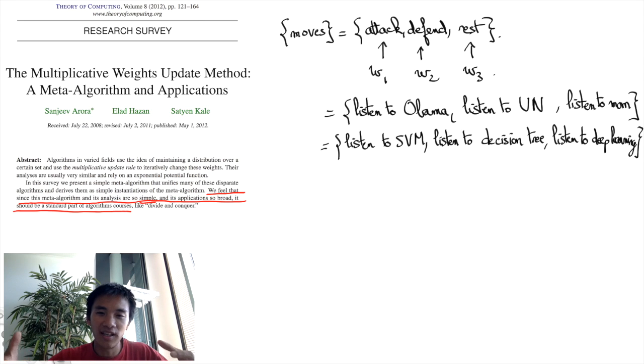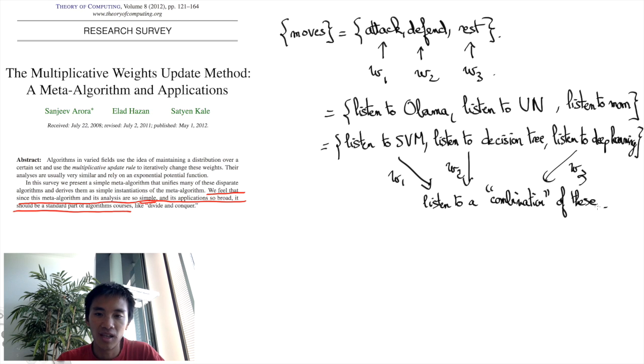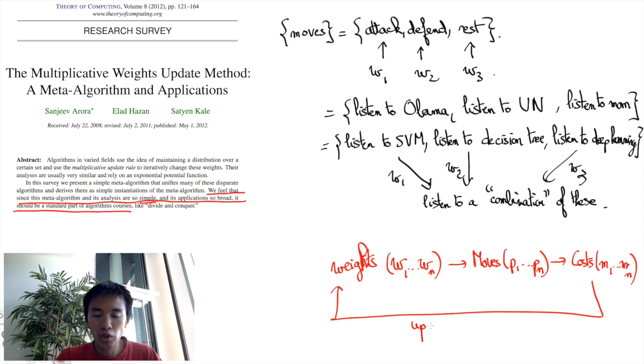However, how exactly the different machine learning algorithms should be combined is unclear. Well, one way to do so is to apply the Multiplicative Weights Update Algorithm to update weights given to the different machine learning algorithms depending on how the algorithms lastly performed. And crucially, this is done multiplicatively.